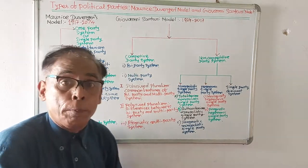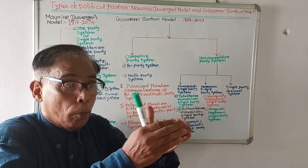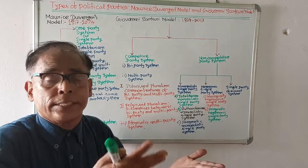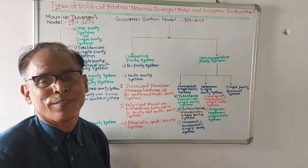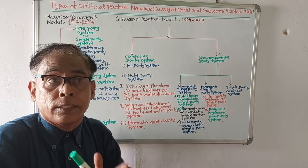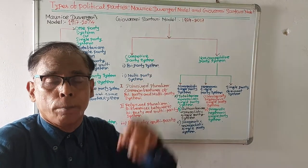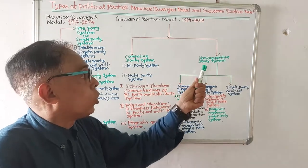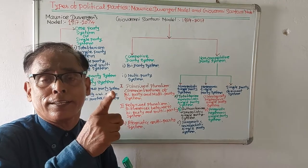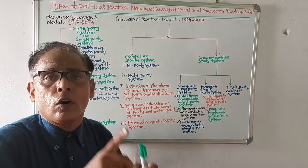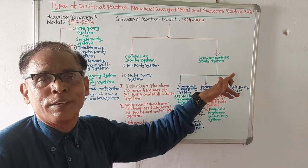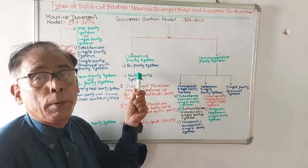In the competitive party system, there will be competition among parties to get the power. Competitive party system means where there will be competition among political parties to capture the power and to form the government. Non-competitive party system means if in a country there will be only one political party — it will compete with whom? So it is known as non-competitive party system.